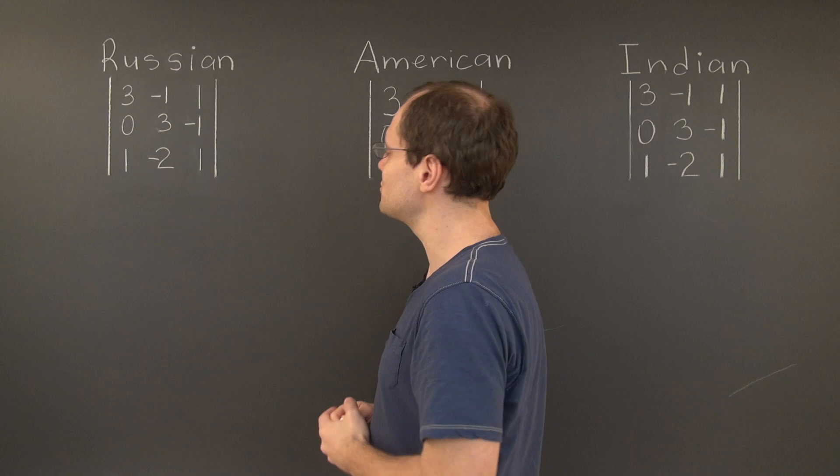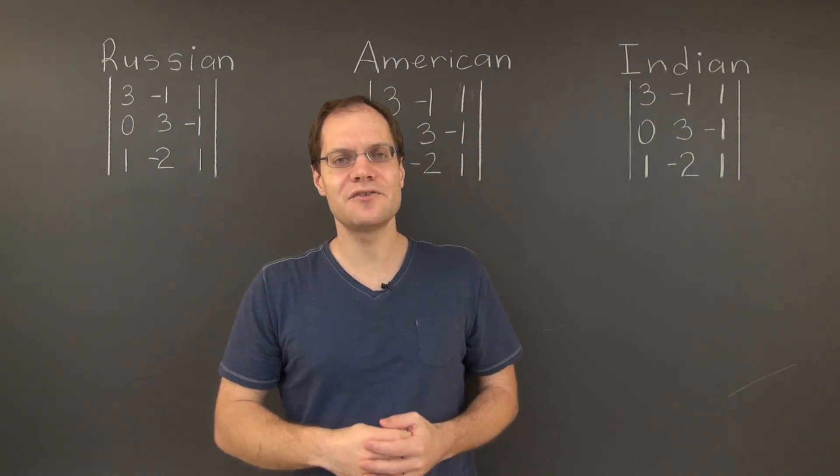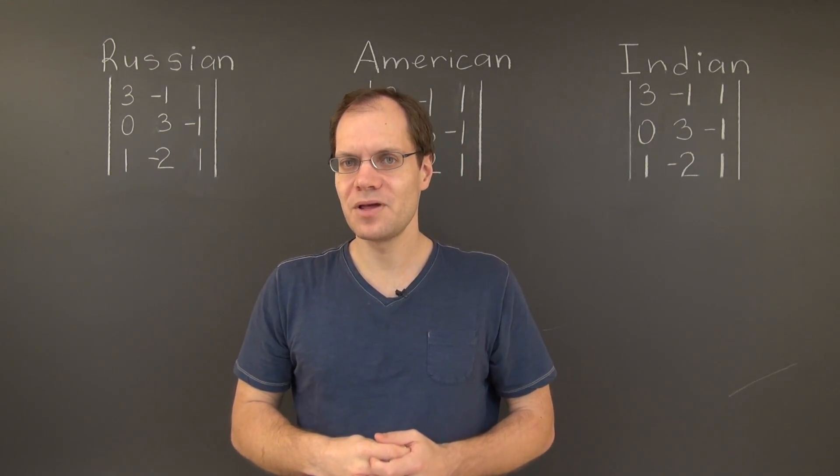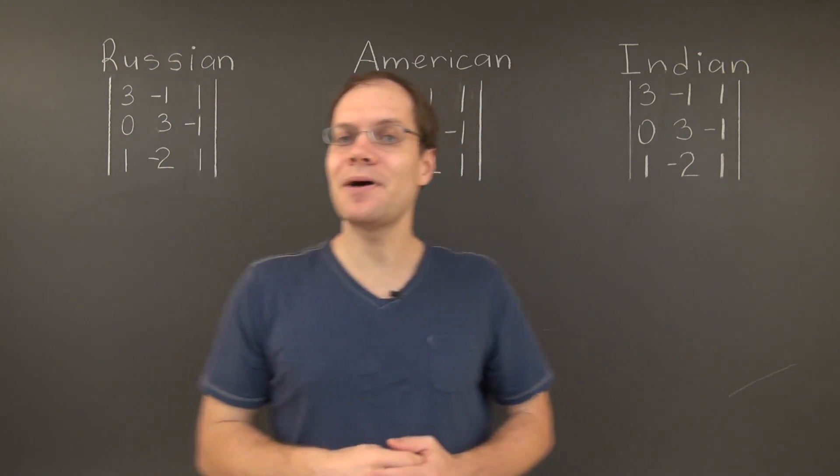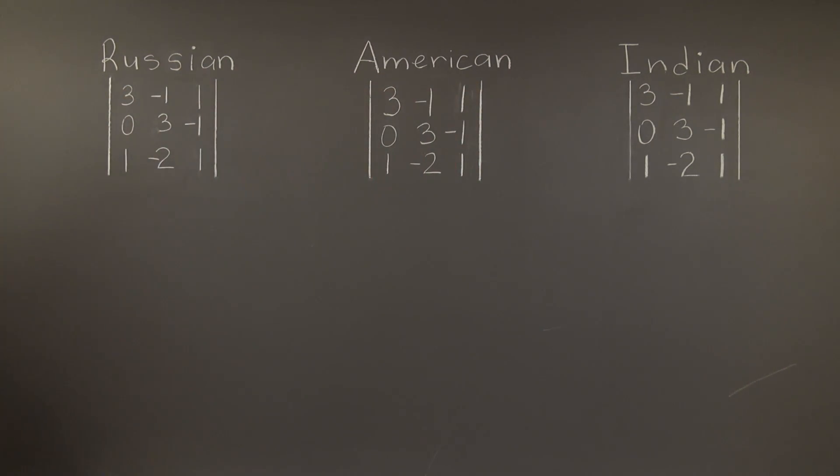I would like you to look at this matrix and visually identify the three positive patterns and the three negative patterns. Let me step out of the shot and help you point them out. The first positive pattern comes from the main diagonal itself and so it's 3 times 3 times 1, which equals 9.